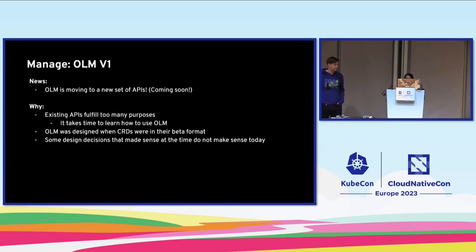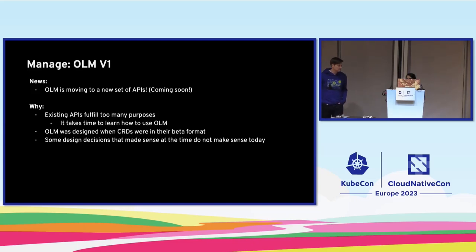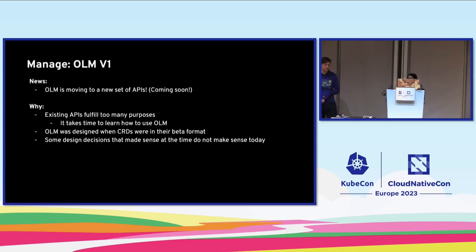So what's new in OLM? We are moving to a new set of APIs and introducing a new version known as OLM v1. Why are we doing this? OLM has been in the Kubernetes ecosystem for a very long time. The existing APIs that OLM developed were not isolated and fulfilled too many purposes at once, which made it difficult for anyone new to OLM to onboard. Additionally, OLM was designed at a time when CRDs were still in beta format, so many of our design decisions are no longer relevant. That's why it made sense to develop a new architecture based on the learnings from OLM v0 and introduce a new set of APIs.